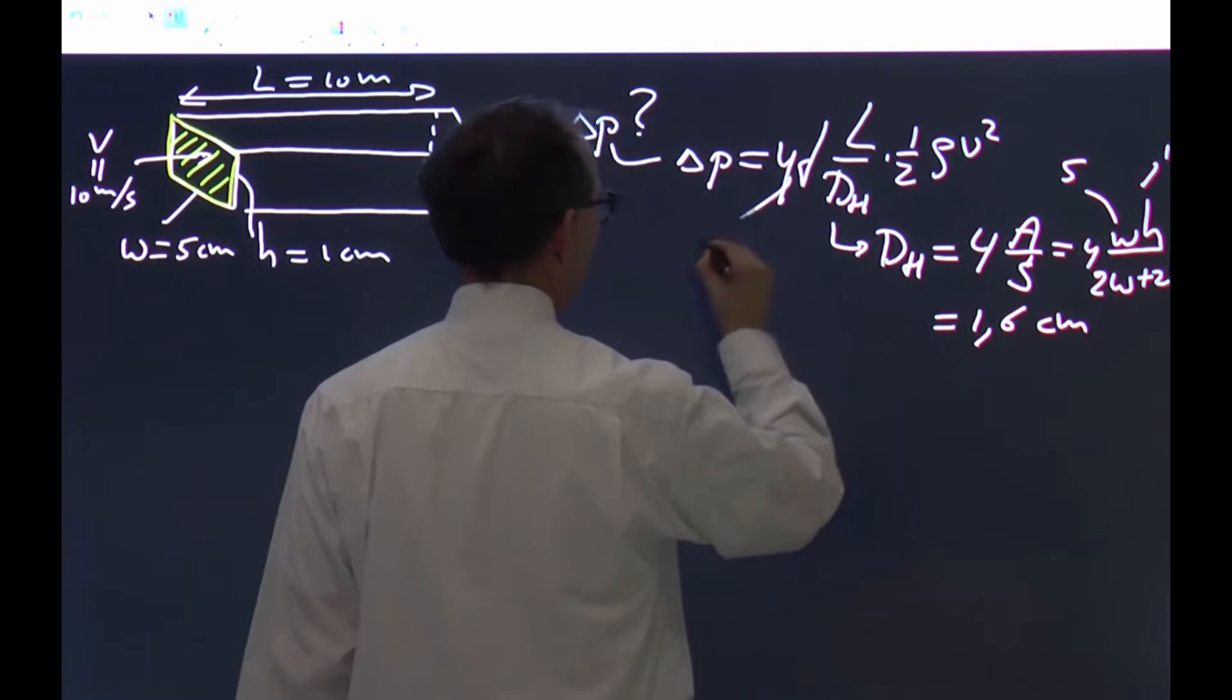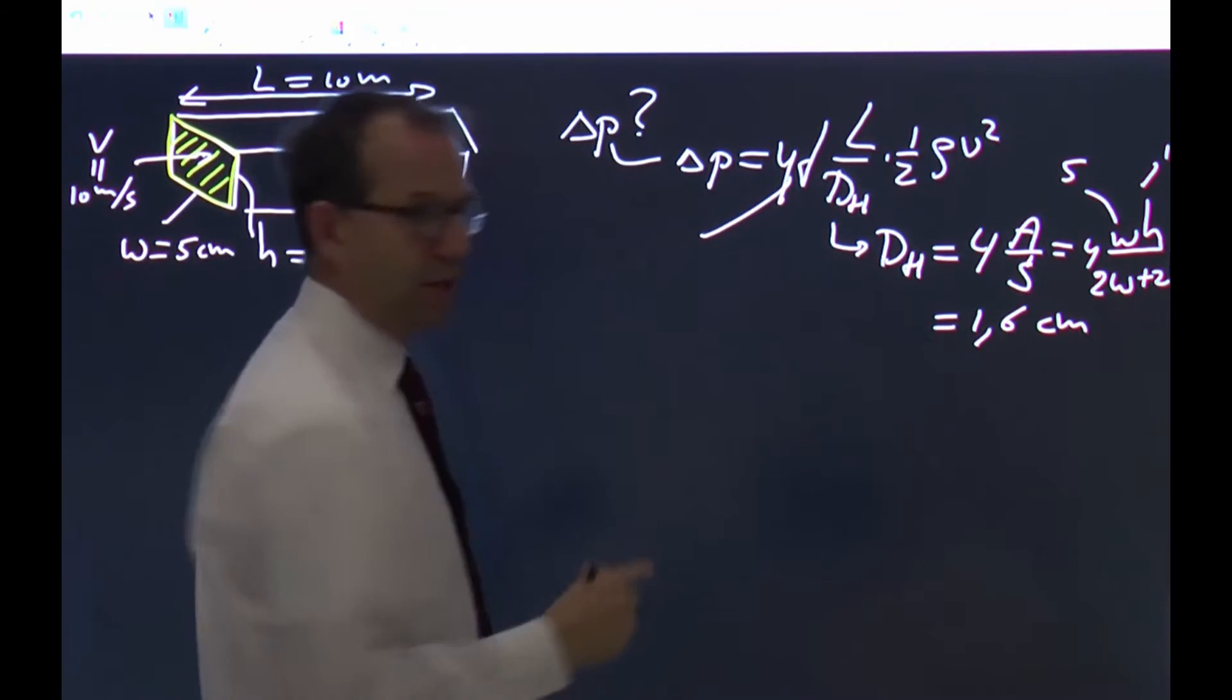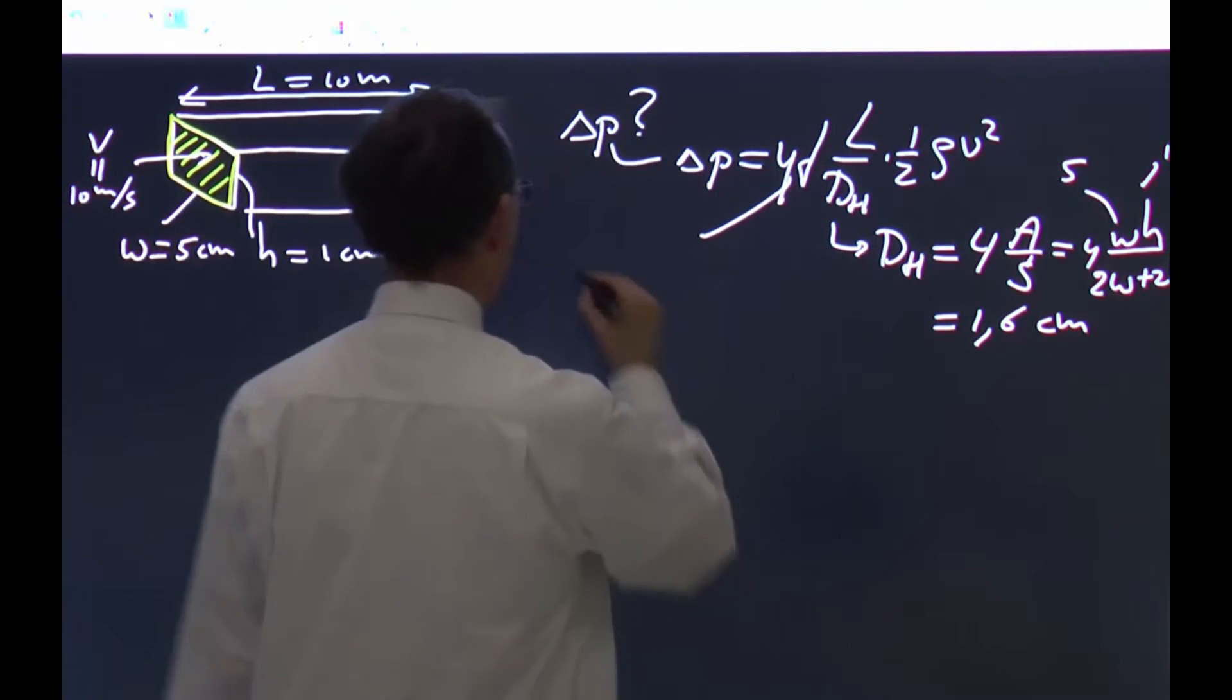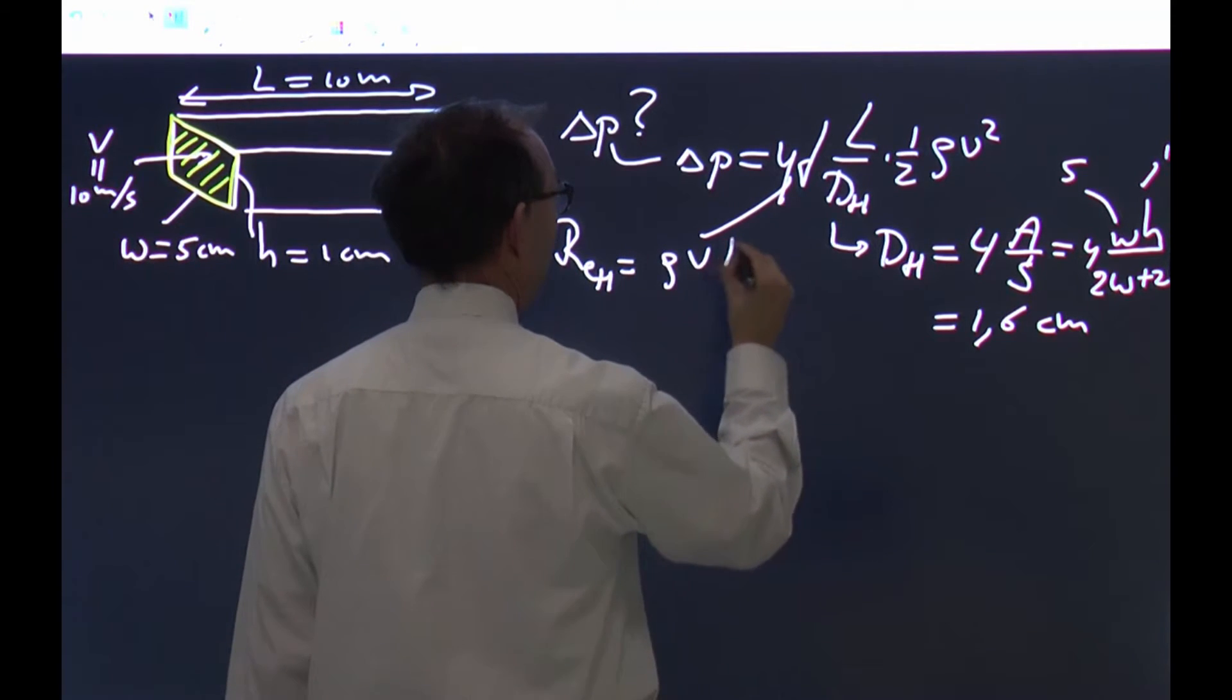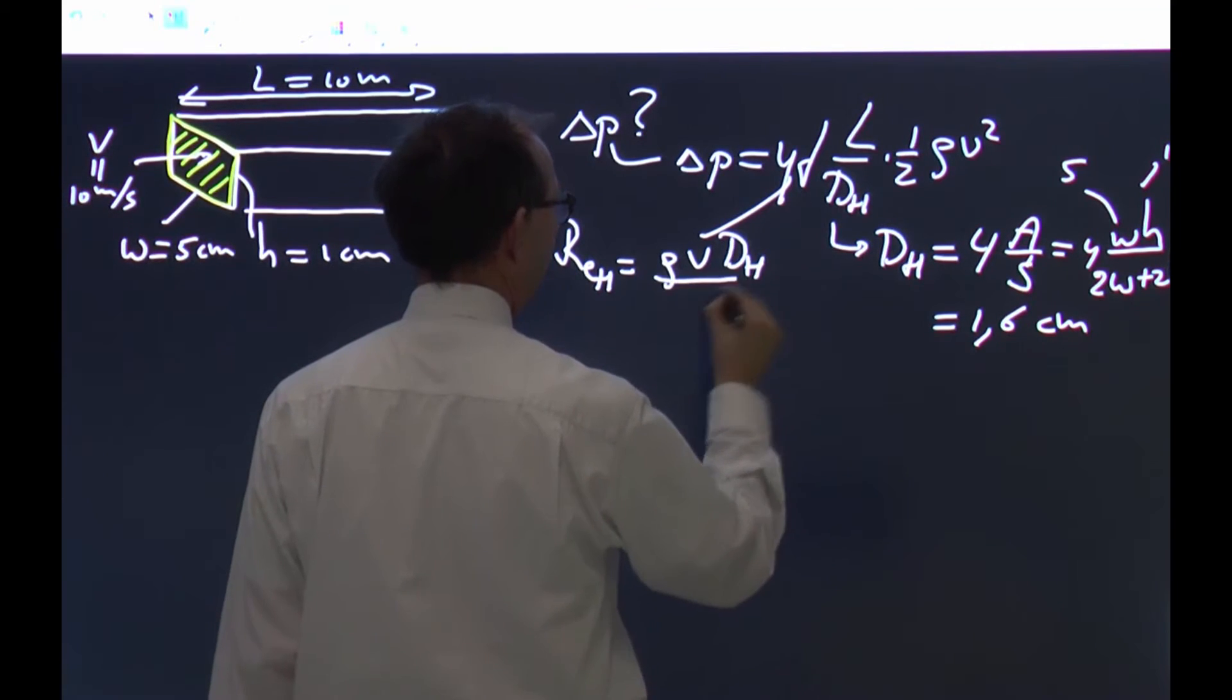Part two is that we need to find a Fanning friction factor. That's a function of the Reynolds number, which is now the Reynolds number based on the hydraulic diameter.